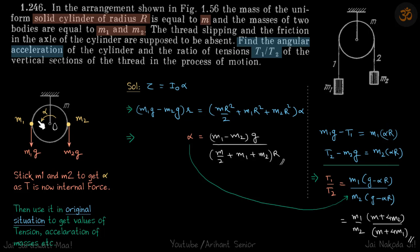Again, as we discussed in problem 1.243, when we have masses hanging on the side of the pulley, the immediate alpha we can calculate by sticking these masses on the ends of the pulley. Let's assume the angular acceleration is on this side. Since we're dealing with variables, it doesn't matter. Stick m1 and m2 to get alpha as tension is now internal force.